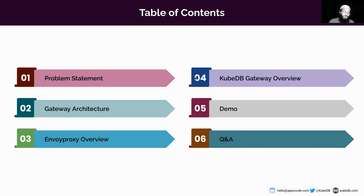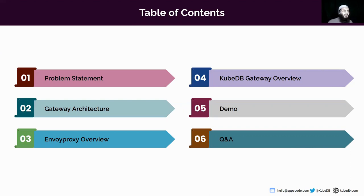Entering the problem statement: it has become commonplace that users are running databases inside Kubernetes. A common pattern is to use separate clusters for user applications and databases. But this creates a challenge on how to access the database across Kubernetes clusters from the application cluster. There is no standard mechanism for Kubernetes today, but typically this can be solved by introducing a proxy between the database and the applications that connect to them.